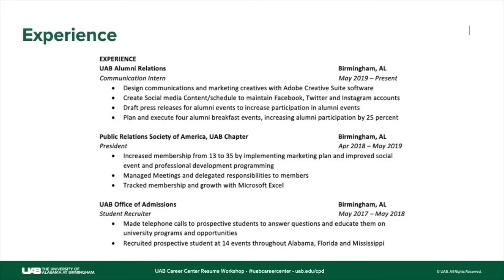As we move into experience, I'll share a couple of examples. In this first example, we just label it as experience. The person here has UAB Alumni Relations — I'd recommend writing University of Alabama at Birmingham Alumni Relations, located in Birmingham, Alabama. The role is communication intern, the time frame is May 2019 to the present, and then bulleted statements about what they achieved during that experience. Then you see Population Society of America, UAB chapter, Birmingham, Alabama, with the role of president, from April 2018 to May 2019.